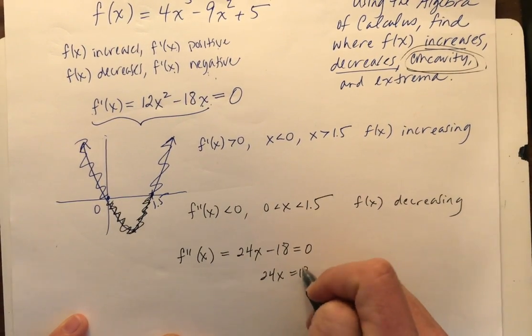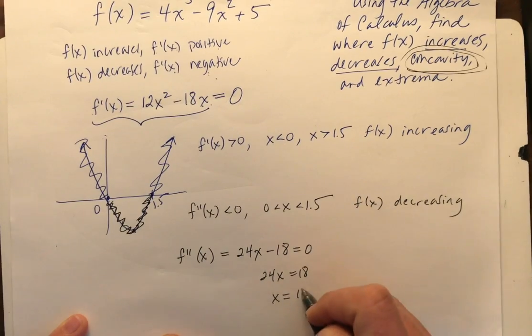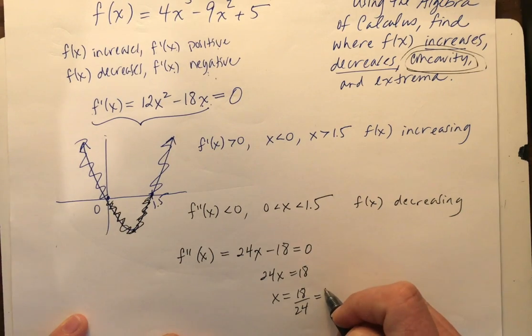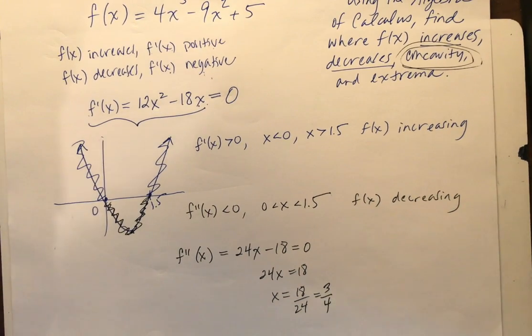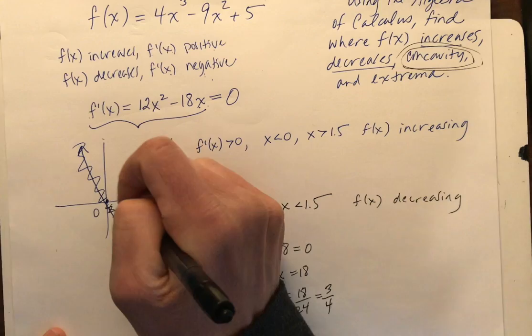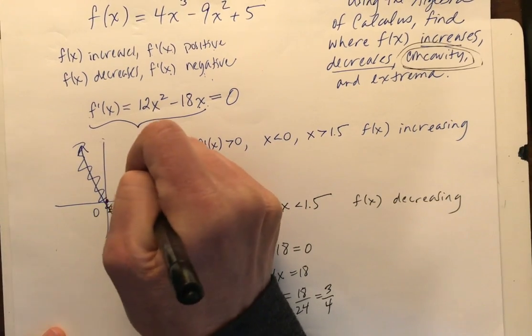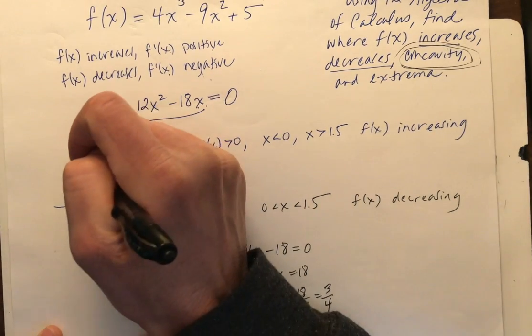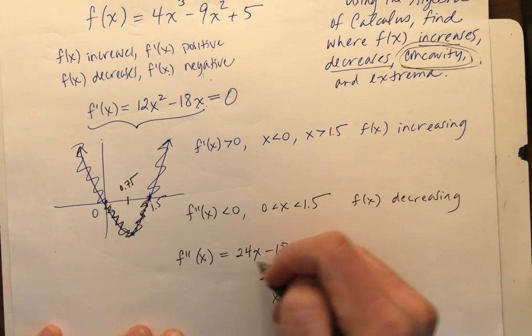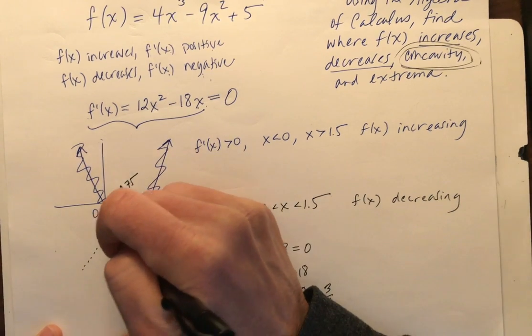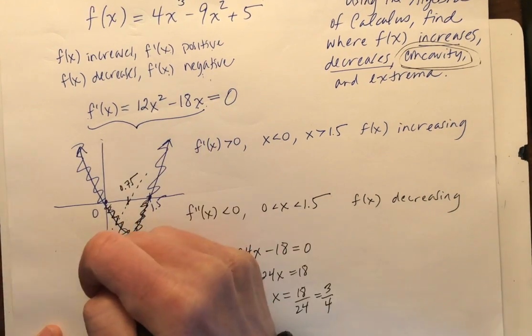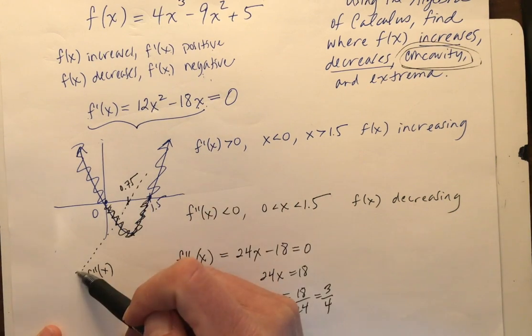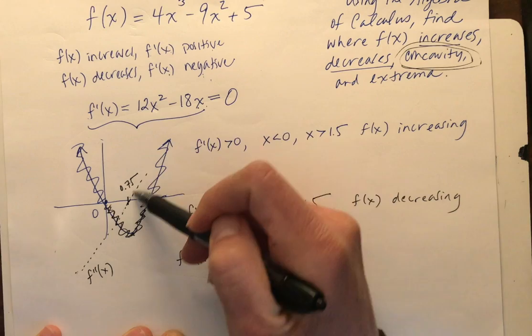Well, 24x equals 18, x equals 18 over 24, which that is 3 fourths, 0.75. So right here. Sweet. So I'm going to be concave down. Let's see here. This is my second derivative. I'm going to do it in a dotted line. So the second derivative is concave down when x is less than 0.75, concave up when x is greater than 0.75.